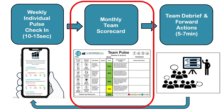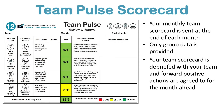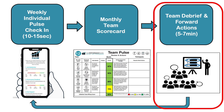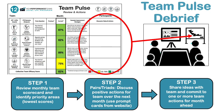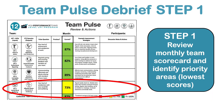Part two is the scorecard, which you receive once a month. You can see one on the screen — the group data is displayed and you can quickly see where the team is doing well as a collective and where there might be room for improvement. In the debrief protocol, step one is to review the scorecard and identify the priority area — the lowest score. In this example, we can see the priority area is work-life and well-being.